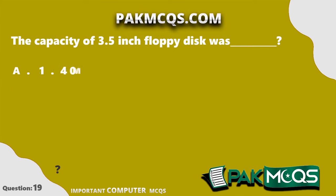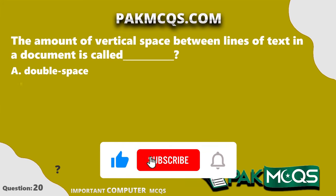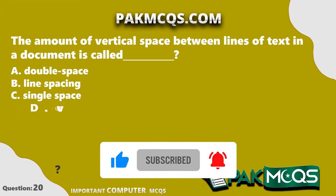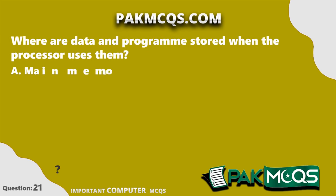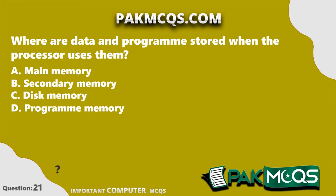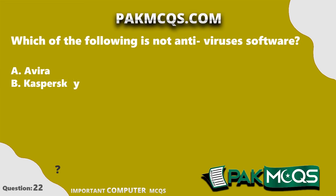The capacity of a 3.5-inch floppy disk was 1.44 megabytes. The amount of vertical space between lines of text in a document is called line spacing. Data and programs are stored in main memory when the processor uses them. Oracle is not antivirus software.